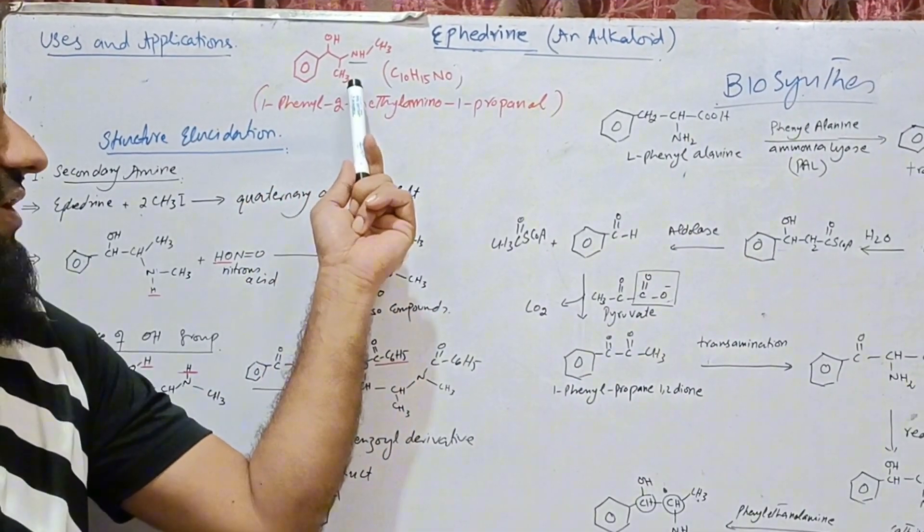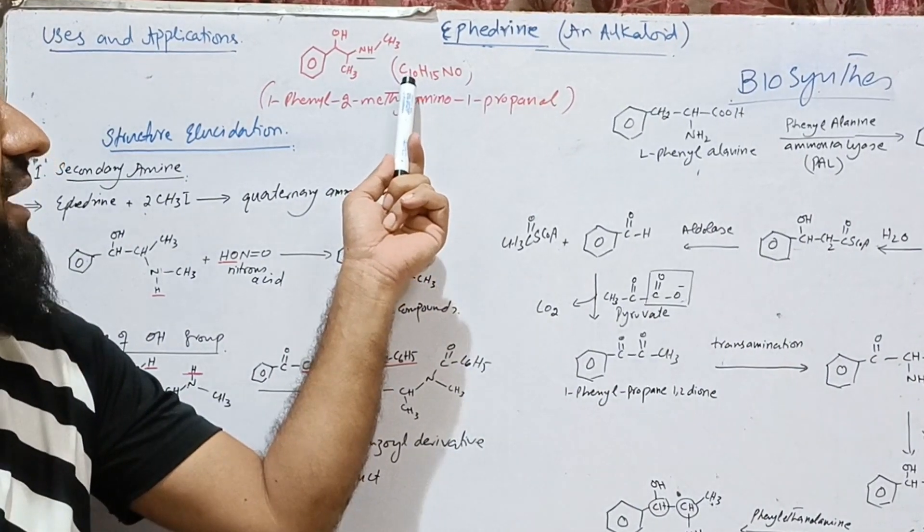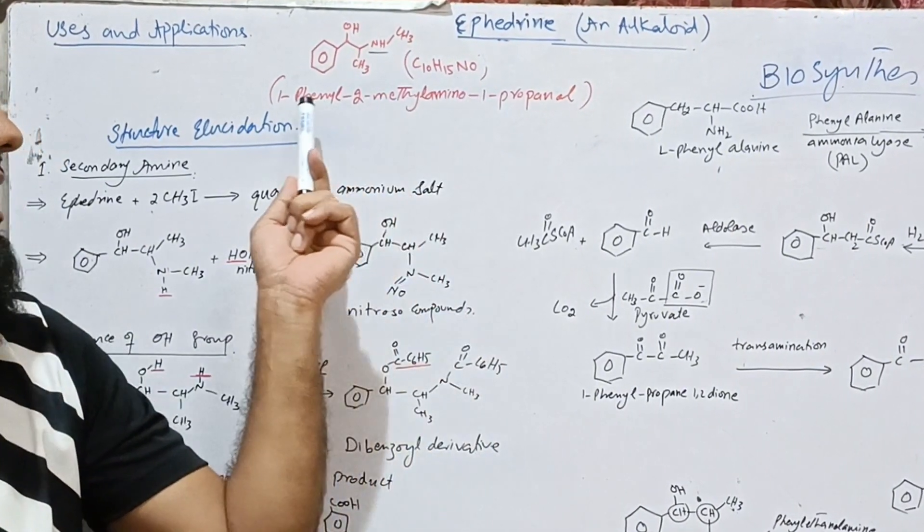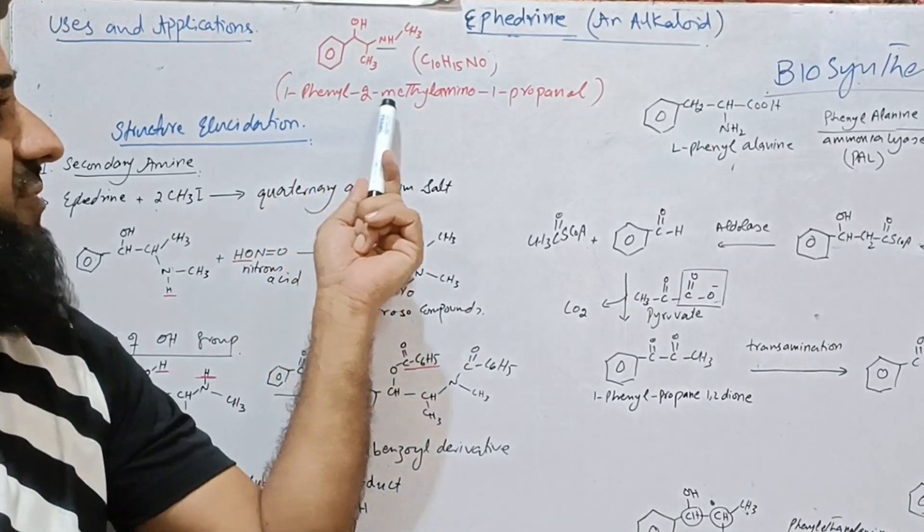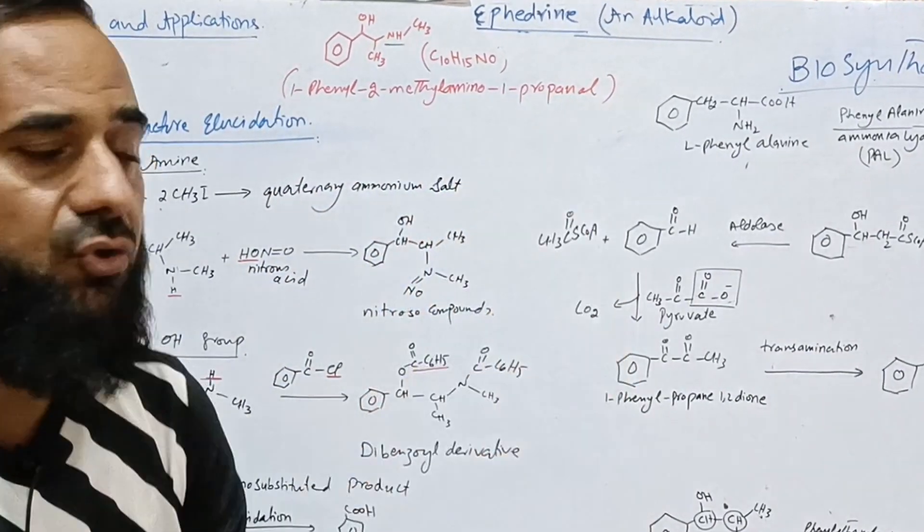This is the structure of ephedrine with molecular formula C10H15NO. The IUPAC name is 1-phenyl-2-methylamino-1-propanol.